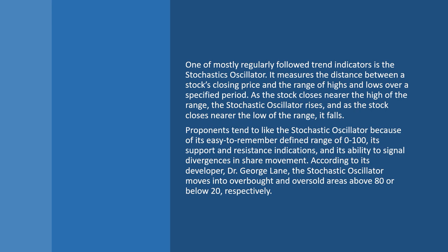Stochastics falls into a group of technical indicators known as oscillators, and specifically into a tighter group known as bounded oscillators, because Stochastics will always come out between 0 and 100. It's bounded between 0 and 100, and it oscillates between those numbers. We put up barriers — fences — between the 80 and the 20.